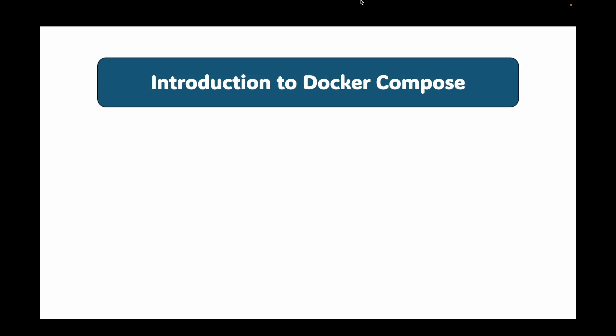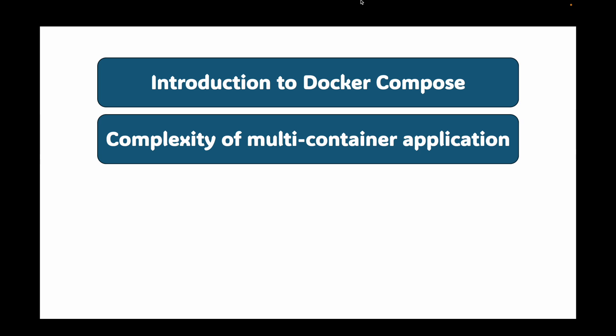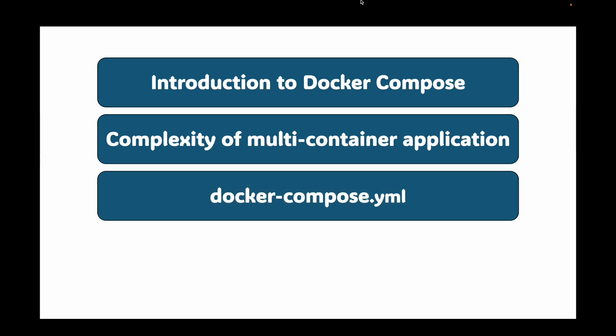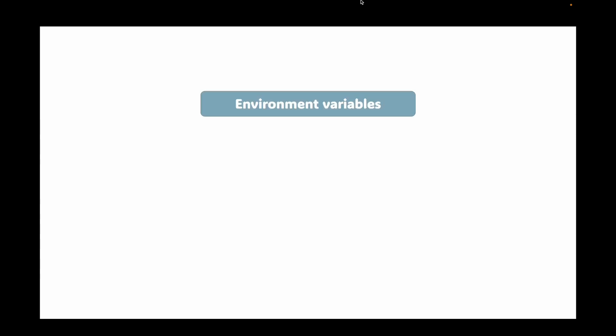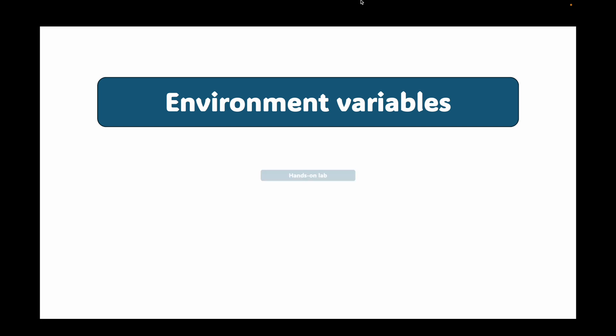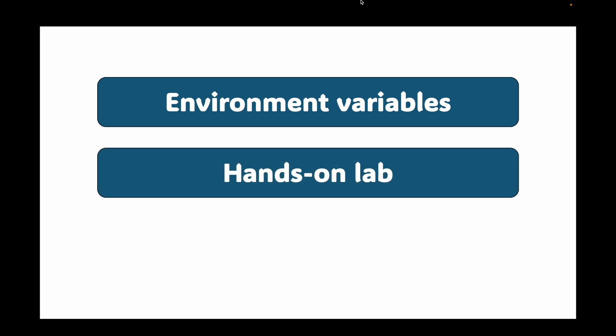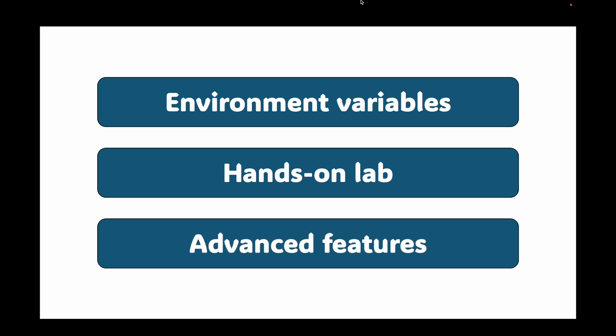Hello and welcome back. In our last session we got introduced to Docker Compose and saw how it can tame the complexity of multi-container applications. We learned about the docker-compose.yaml file and essential commands like docker compose up and docker compose down. But we left a couple of big questions on the table: how do we handle sensitive information like passwords, and how do we actually convert a real project to use Compose? Today we are going to answer those questions. We will dive into environment variables for configuration, get our hands dirty with a real lab, and then peek at some advanced features that make Compose incredibly powerful.